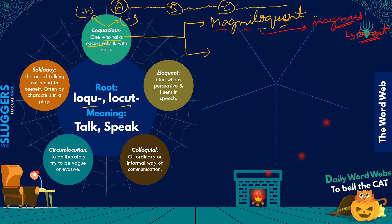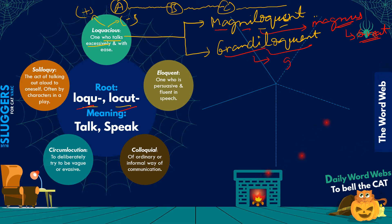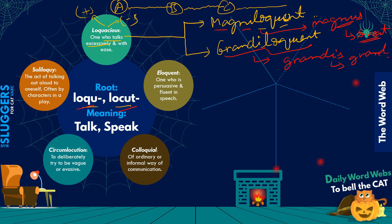Another term you can use is grandiloquent. Again, the second part comes from today's root, and the first part 'grandi' comes from Latin grandis — G-R-A-N-D-I-S — which stands for something grand, like the grand slams in tennis — the major tournaments like Wimbledon or the Australian Open. So that covers loquacious, magniloquent, and grandiloquent. Let's move on to eloquent.